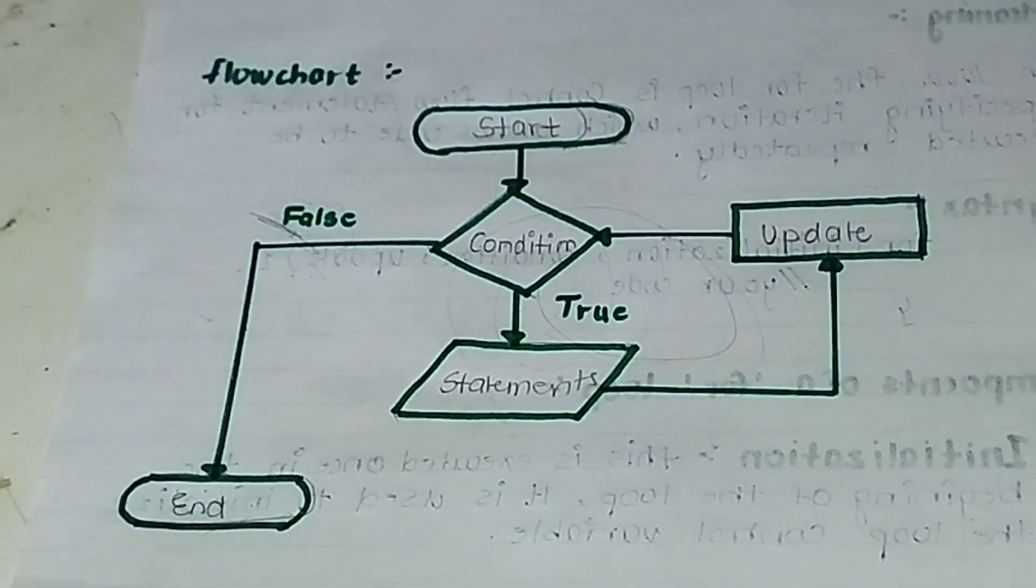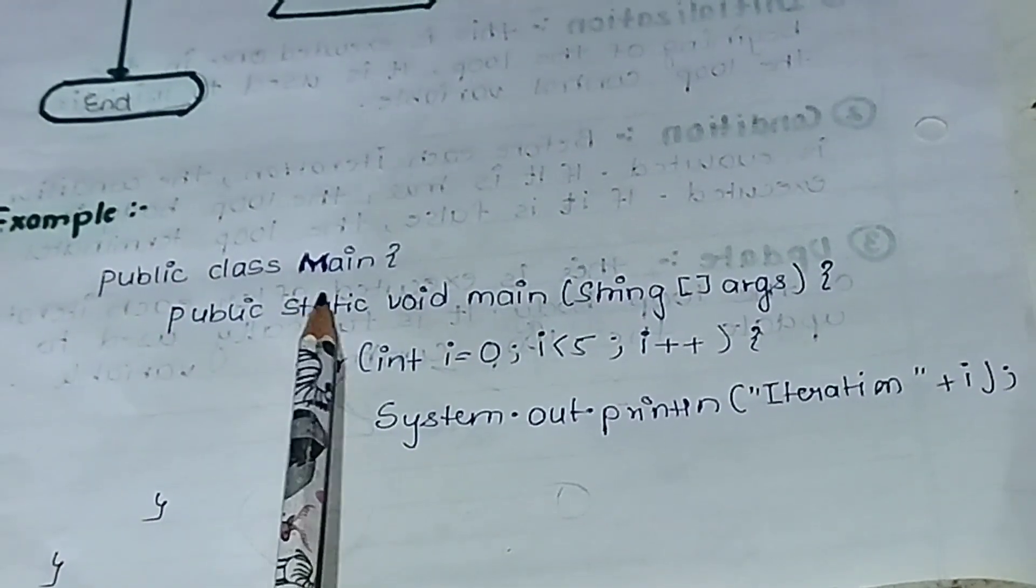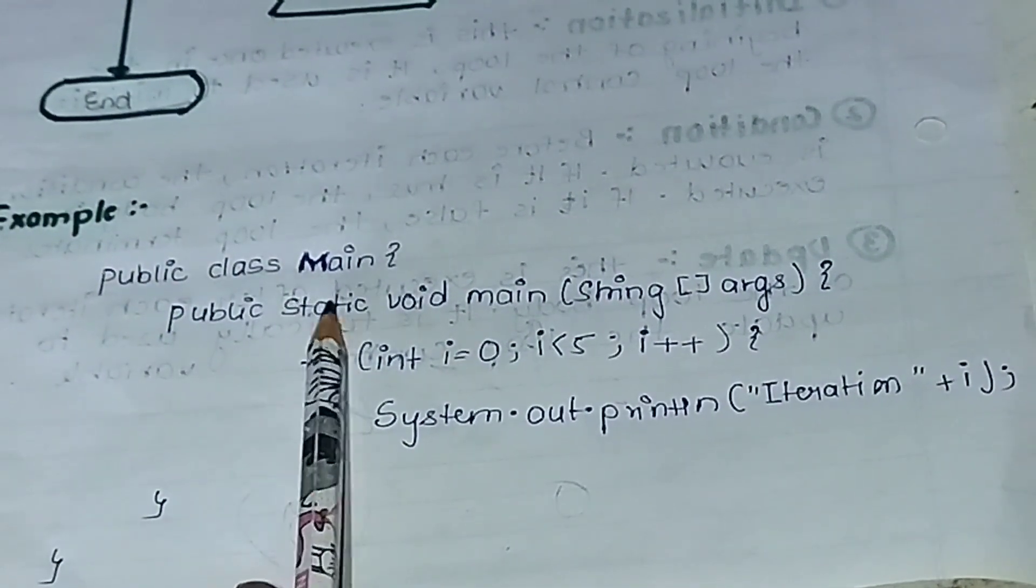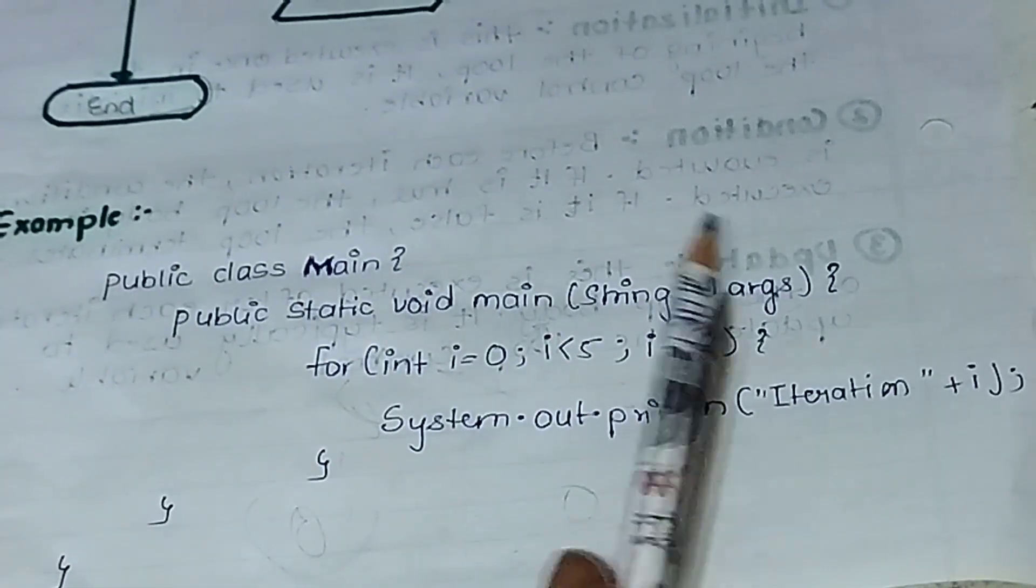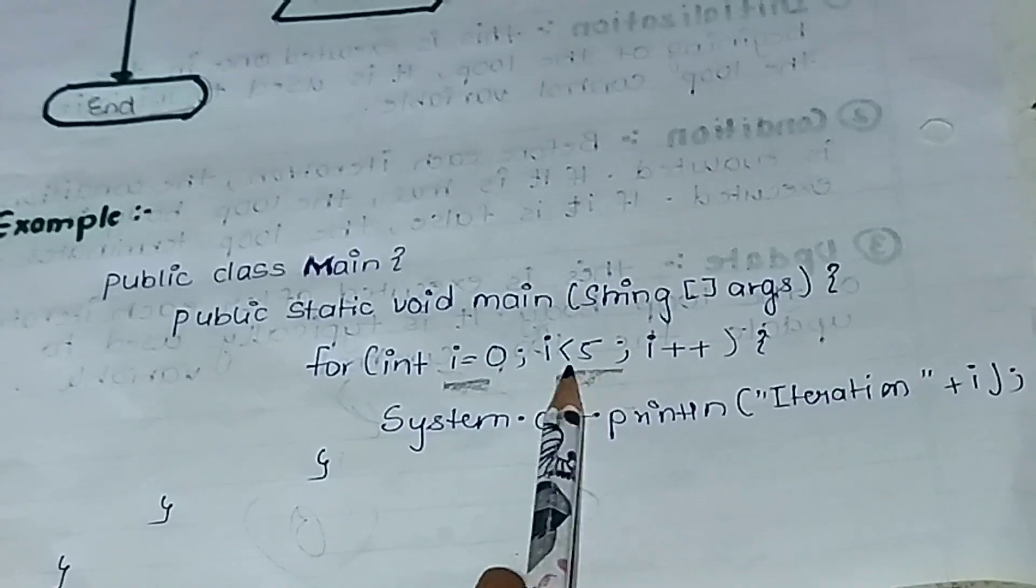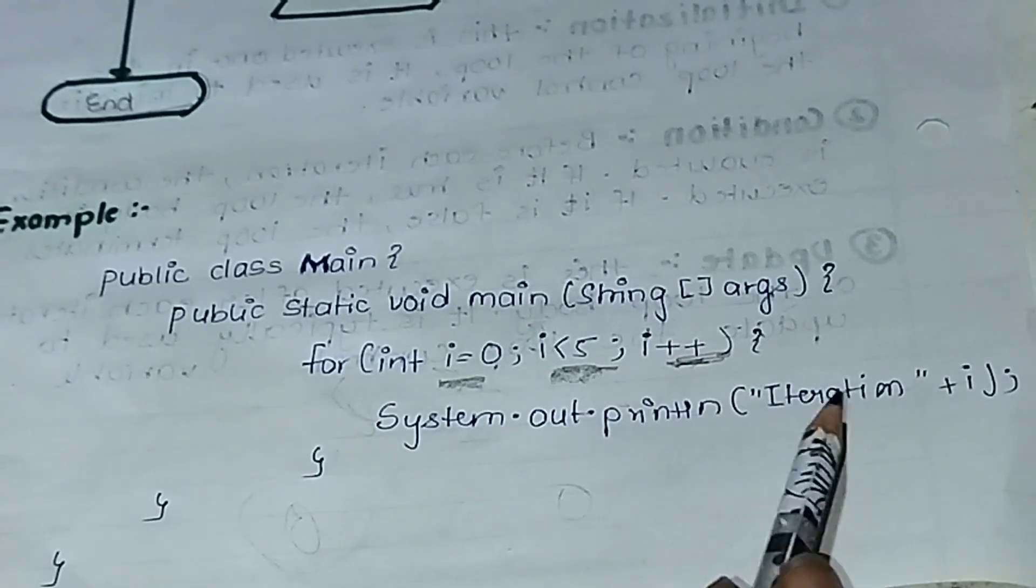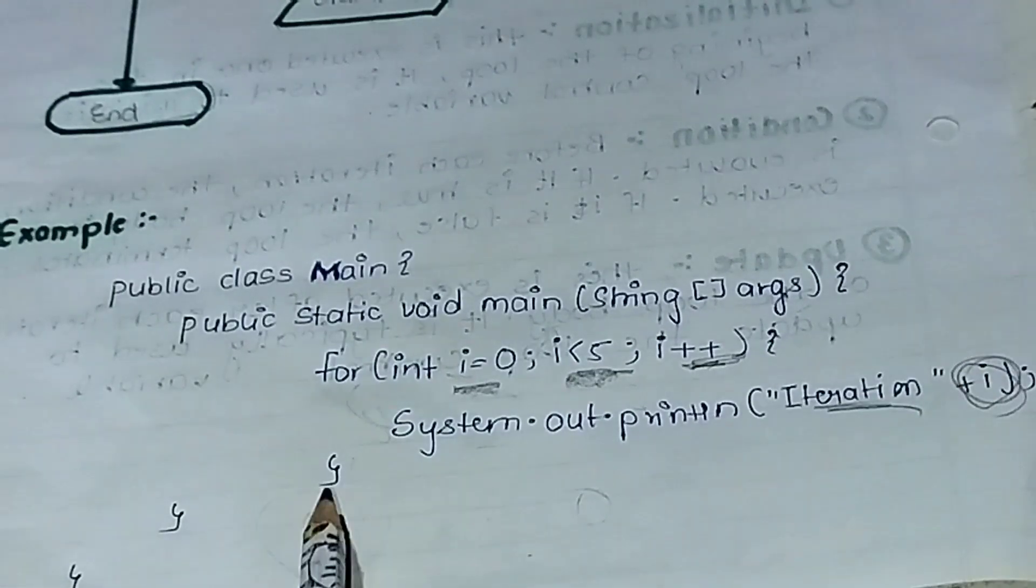Now let's see an example. Our class name is public class Main. Public static void main, String args. For int i equals 0, i is less than 5, i plus plus. And then we are printing System.out.println iteration, and here we print the value of i.